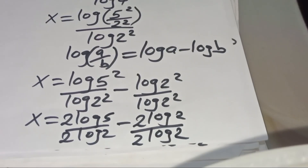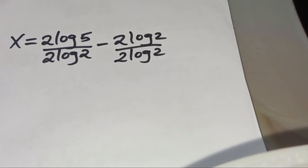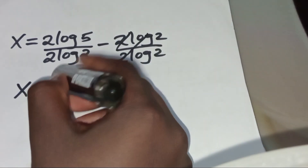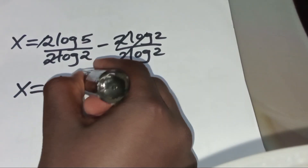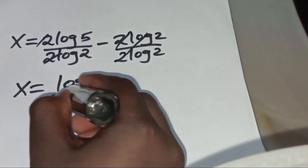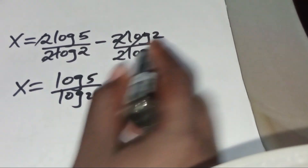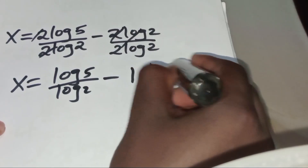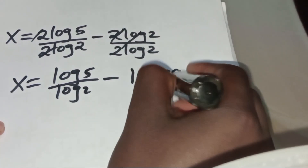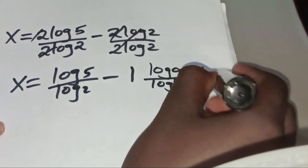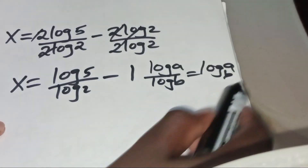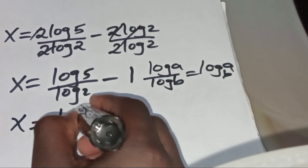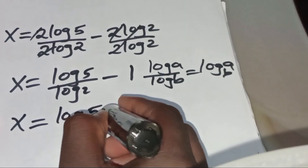So let's simplify: after simplification the value of x equals √5 divided by √2, minus 1. And √5 divided by √2 is in the form of √a divided by √b, which we can express as log base 2 of 5. Applying this property, x equals log base 2 of 5, minus 1.